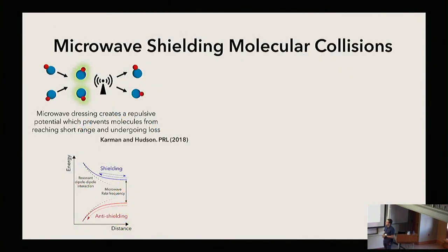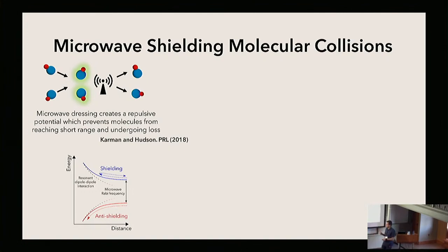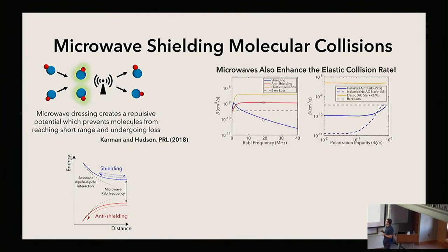Specifically what we investigated was microwave shielding of these molecules. This was a theory proposal from Tijs Karman and Jeremy Hudson, where the idea is that if we resonantly dress the molecules with microwaves, we create a repulsive potential in the upper dressed state. There's also an anti-shielded state where the rate of inelastic loss would be increased because you're attracting the molecules to short range. Not only does this shielding scheme decrease the rate of inelastic loss, it also increases the rate of elastic collisions, which is very useful for future evaporative cooling, since the ratio of elastic to inelastic collisions becomes very high.